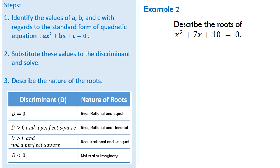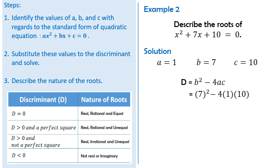Describe the roots of x squared plus 7x plus 10 equals zero. Following the same steps, step 1: a is equal to 1, b is equal to 7, and c is equal to 10. Step 2, substitute: we have 7 squared minus the product of 4, 1, and 10. So 7 squared is equal to 49, and the product of 4, 1, and 10 is 40. So we have 49 minus 40, giving us a discriminant equal to 9.